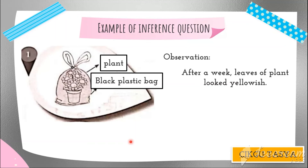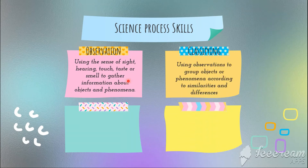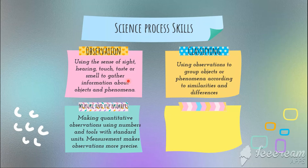To summarize: observations are made using the five senses — sight, hearing, touch, taste, and smell. When classifying, we group objects according to their similarities and differences based on their characteristics. For measure and use numbers, we make quantitative observations using numbers, tools, and standard units. For inference, it is reasoning for your observation — asking why something happens. Thank you for listening. Comment below if you have questions, and don't forget to share, like, and subscribe.